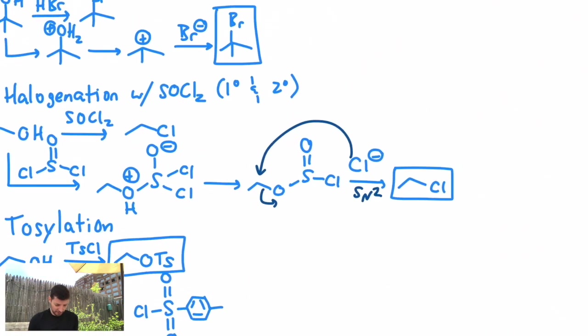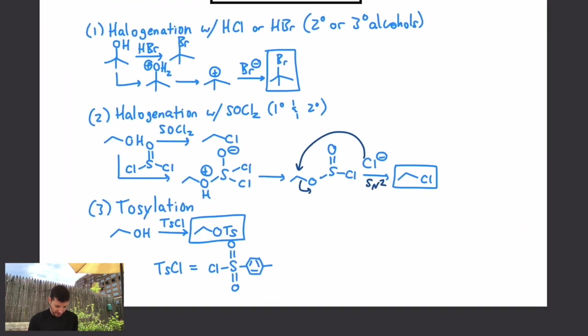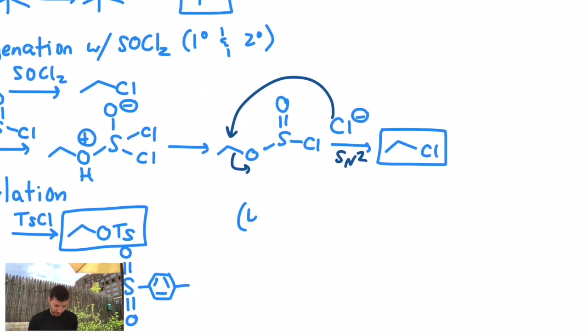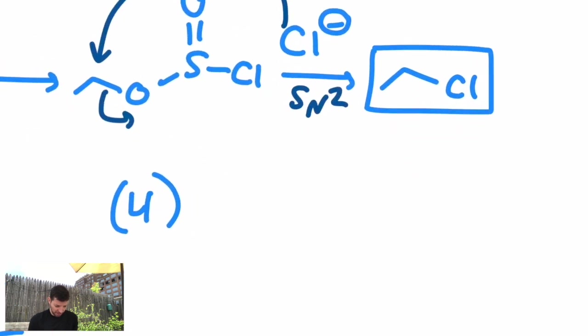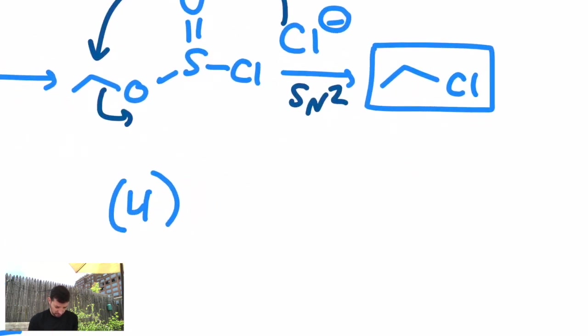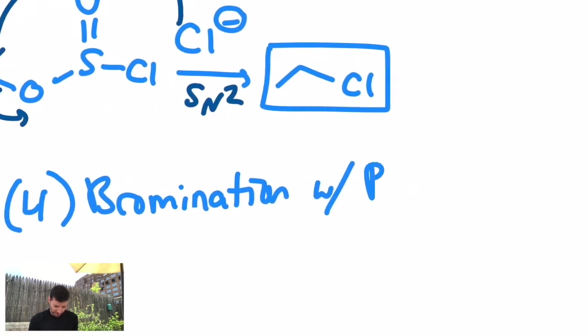Oh, there's actually one other I should show on here. I just realized, in addition to tosylates and chlorides, what about if I want a bromine, and it's on a primary or secondary? Bromination, with a reagent known as phosphorus tribromide.